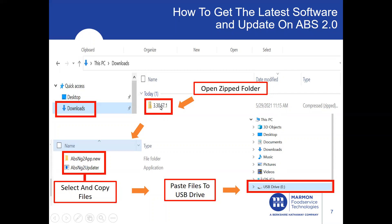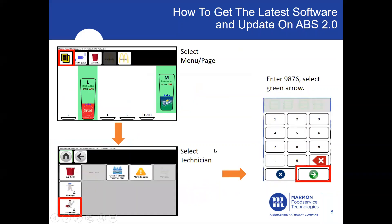You want to open up the zip folder. Inside the zip folder, you'll find two items. Select and copy these files and paste them to the USB drive. You'll locate the USB drive through your laptop — make sure the USB is inserted into the laptop so it can be located through your PC. Copy the items and paste the files to the USB drive, then proceed with taking that USB with you.